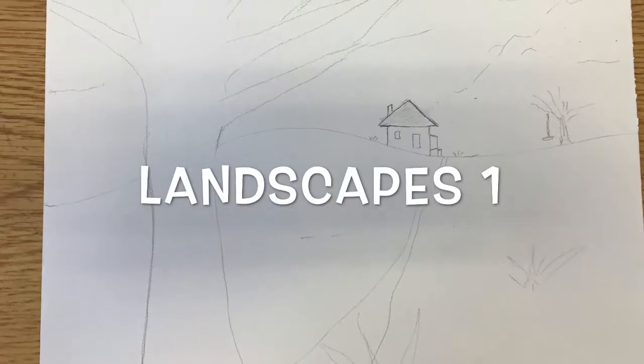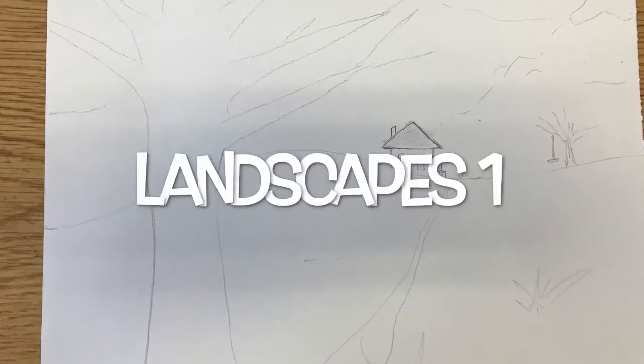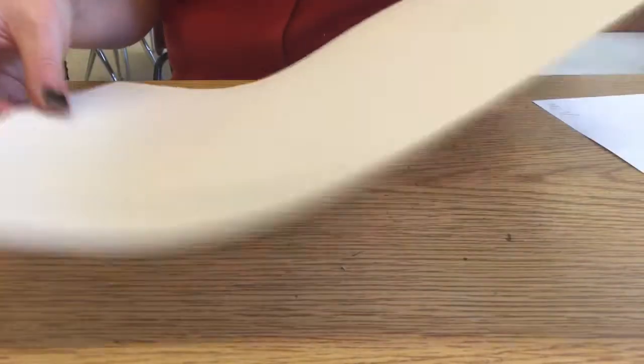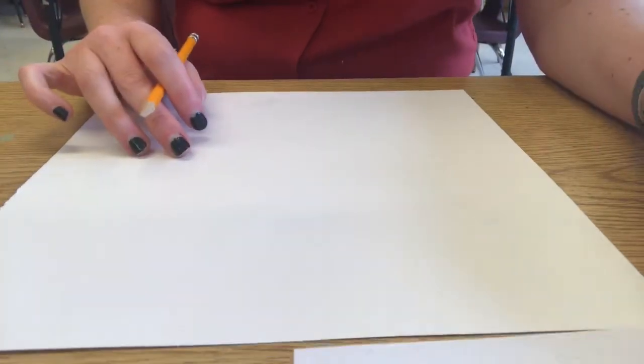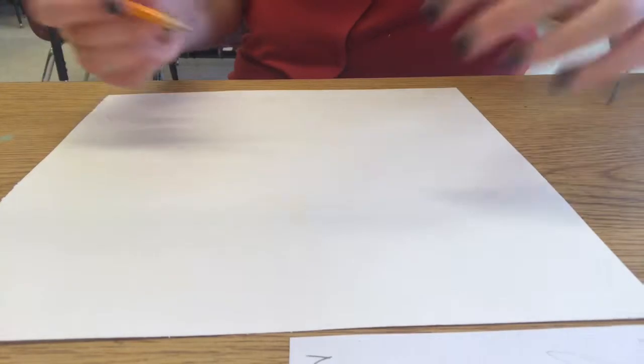Today we will be taking your sketches and redrawing them on our watercolor paper for your watercolor paintings. Watercolor paper is a little thicker and it's very special paper because it works very well with watercolors. It won't fall apart when it's wet so it's really important that we use this paper instead of the sketching paper.